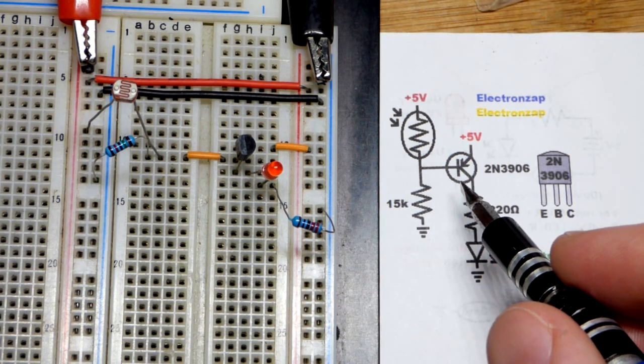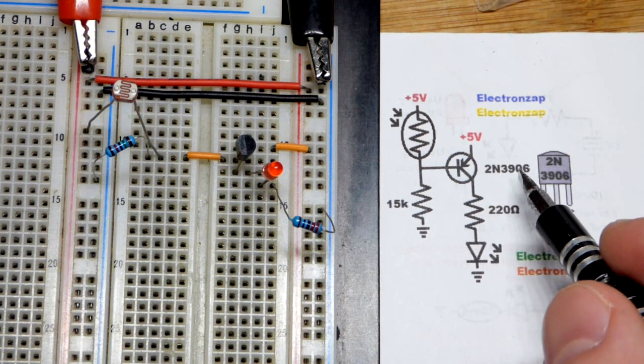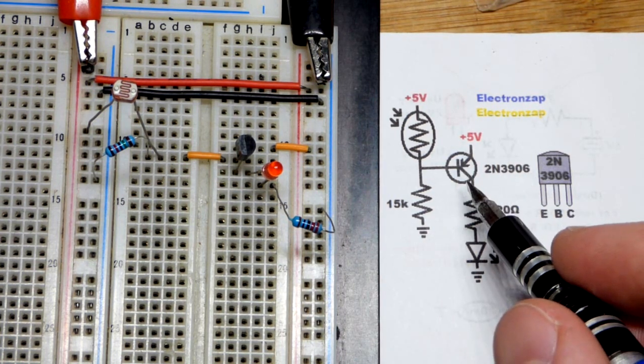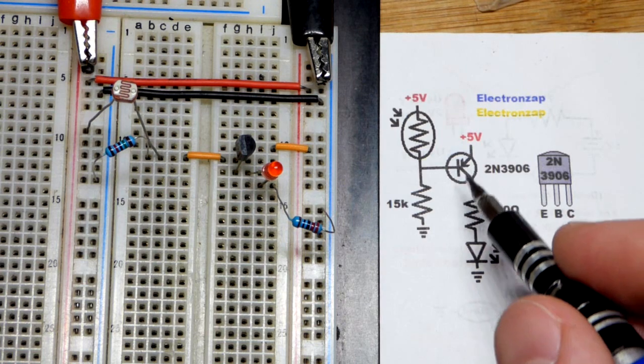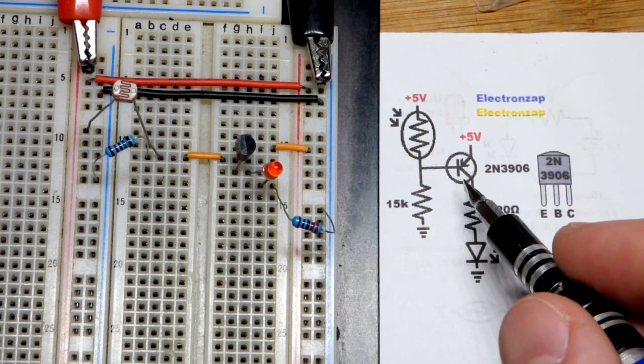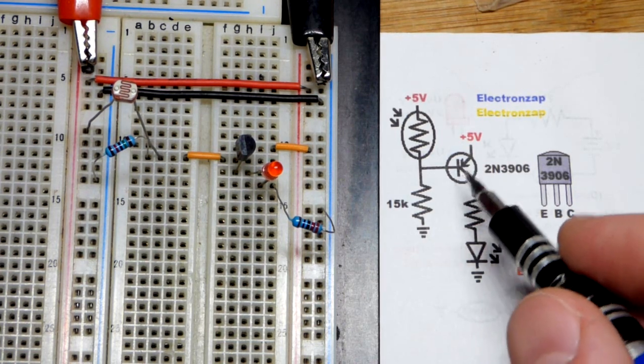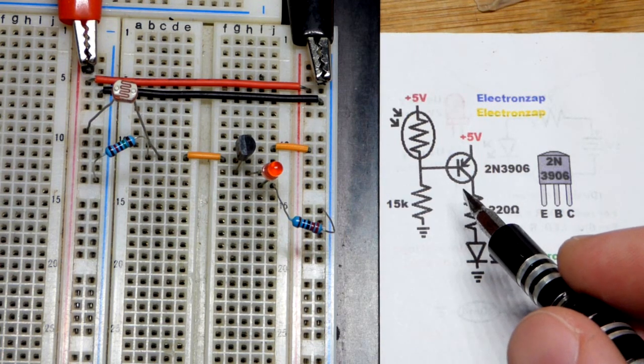The 2N3904 NPN, I made a similar circuit. Now I'm using the PNP. They're wired basically the same except the chemistries are opposite, which you need to be aware of. The current flows in opposite directions through the transistor.